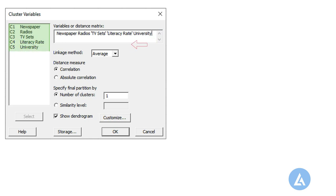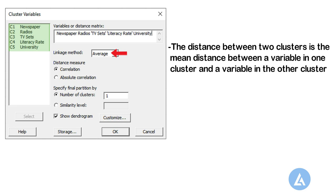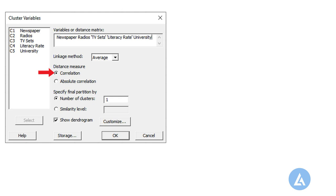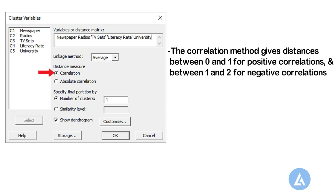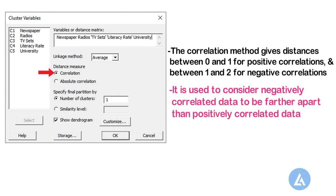From Linkage Method, select Average. The distance between two clusters is the mean distance between a variable in one cluster and a variable in the other cluster. Whereas the single and complete linkage methods are based on single-pair distances, the average linkage method uses a more central measure of location. Under Distance Measure, select Correlation. The correlation method gives distances between 0 and 1 for positive correlations and between 1 and 2 for negative correlations. If it makes sense to consider negatively correlated data to be farther apart than positively correlated data, use the correlation method.